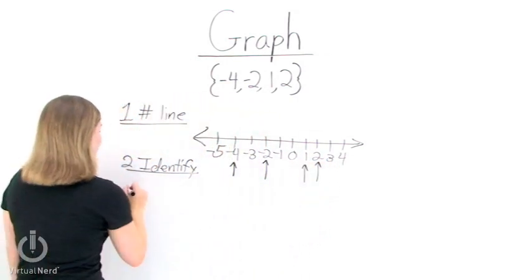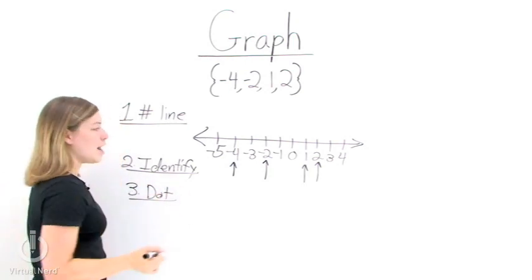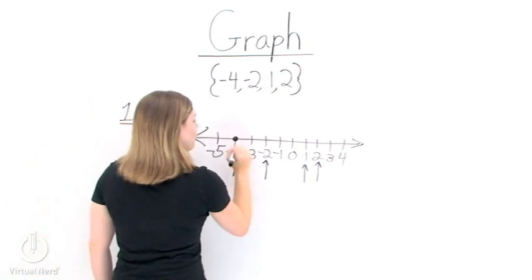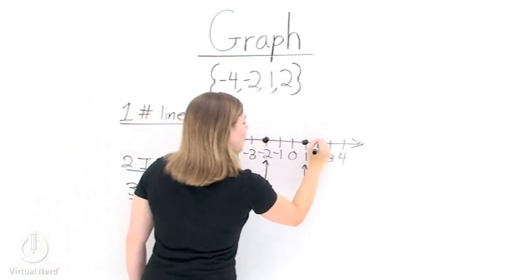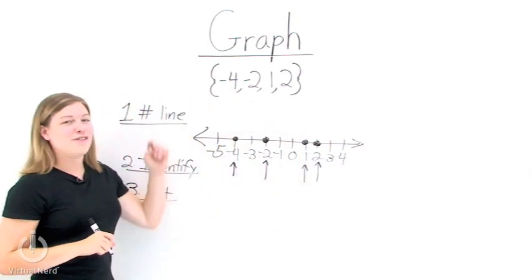Now that we've identified the numbers in the set, step 3 is simply to put a dot at any place we've identified on the number line. So we put a dot at negative 4, at negative 2, at 1, and at 2. Now we have a graph of our set.